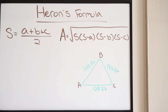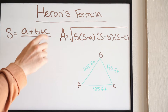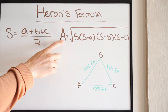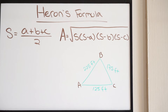Heron's formula is broken down into two equations. The first one we use to calculate the s value. Once we have that s value, we then plug it into the second equation to calculate the area of the triangle. In the bottom right-hand corner I have a triangle drawn out, and we want to find its area using Heron's formula. So our first step is to find the s value.